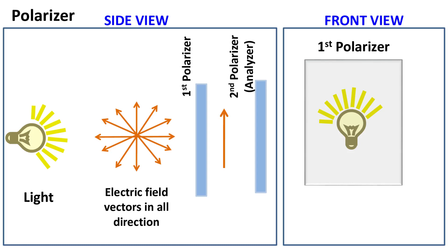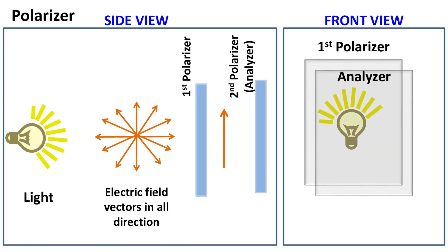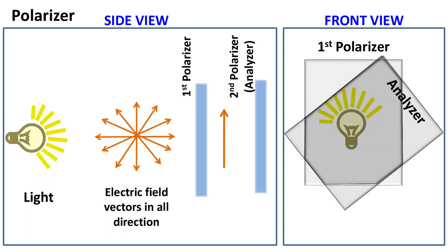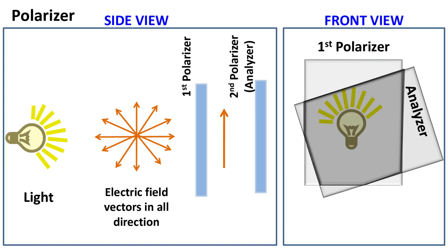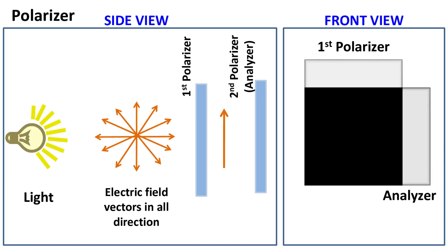We can now have a second polarizer, also known as an analyzer, placed next to the first polarizer. If both are parallel to each other, then the electric field vectors will pass through the analyzer and be observed easily. If the analyzer is crossed at an angle, the intensity of the specimen observed goes down. When the analyzer is at 90 degrees with respect to the first polarizer, the electric field vectors are completely cancelled out and no intensity of the specimen is detected.